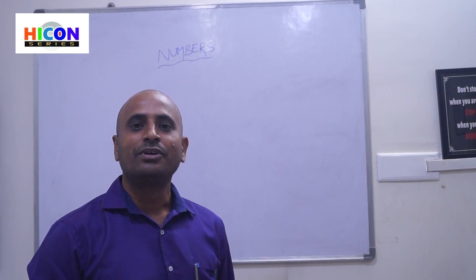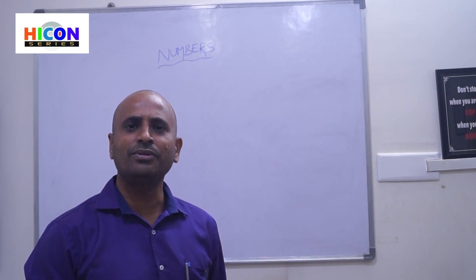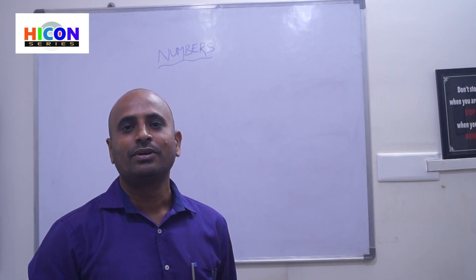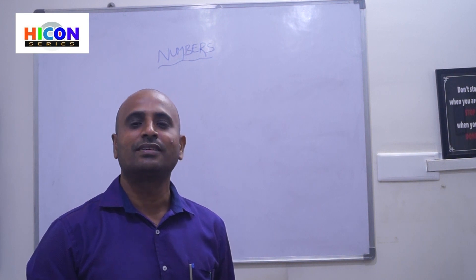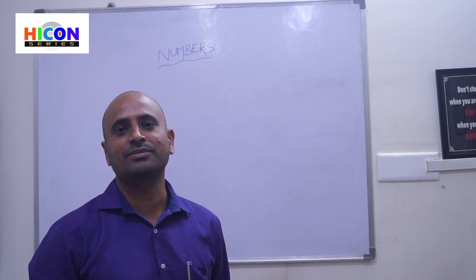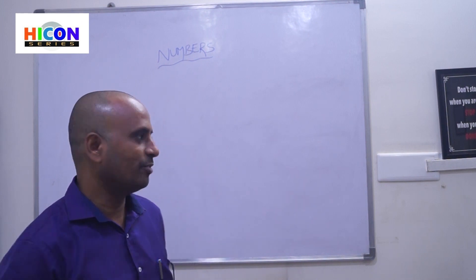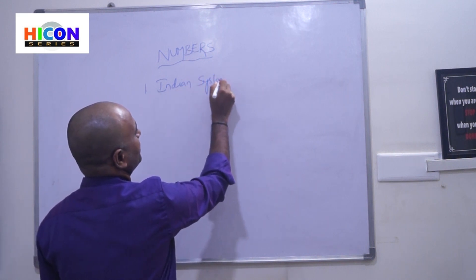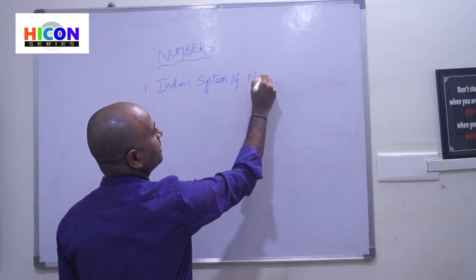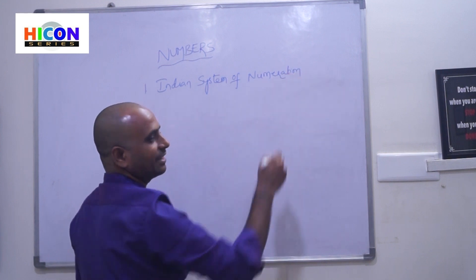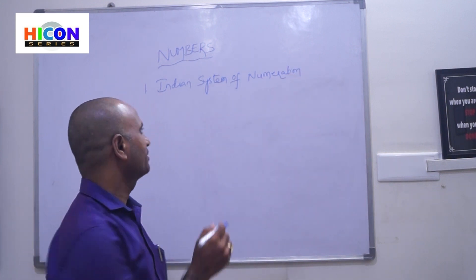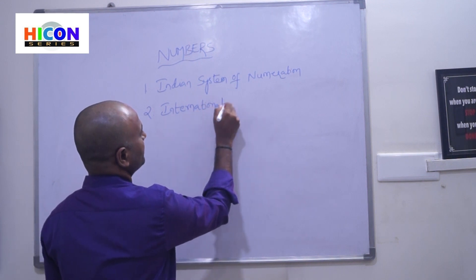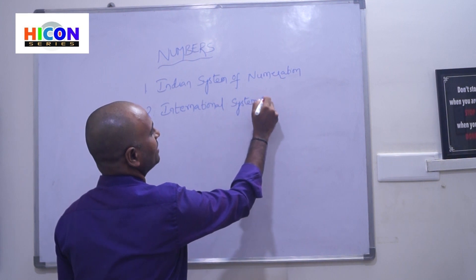Before going to write number names for seven-to-eight-digit numbers, we have to discuss two number systems — two numerations. You have already learned these in third and fourth class. We have two types of number systems: the first is the Indian system of numeration, and the second is the international system of numeration.